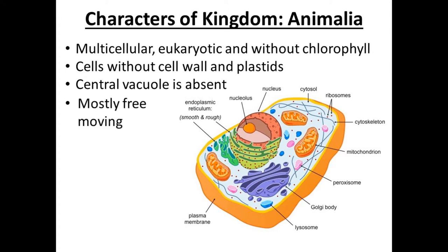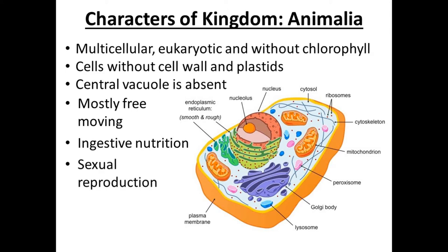Animals are mostly free-moving — they can move freely. The mode of nutrition is ingestive nutrition. Animals cannot make their own food; they take nutrition from other animals or plants and ingest it. Generally, they reproduce by sexual reproduction through the formation of gametes — male and female — followed by fertilization. Animals also have limited growth; they grow only up to a certain age, unlike plants which have unlimited growth.